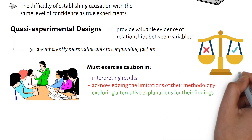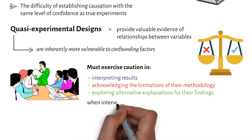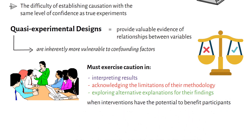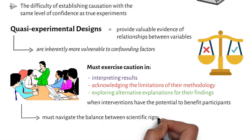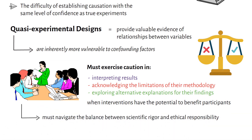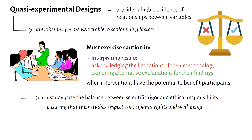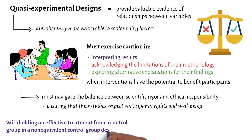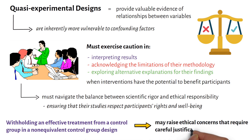Ethical considerations also play a role in quasi-experimental research, particularly when interventions have the potential to benefit participants. Researchers must navigate the balance between scientific rigor and ethical responsibility, ensuring that their studies respect participants' rights and well-being. For example, withholding an effective treatment from a control group in a non-equivalent control group design may raise ethical concerns that require careful justification and mitigation.